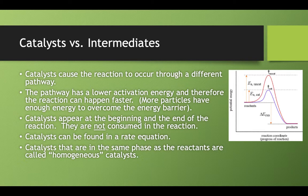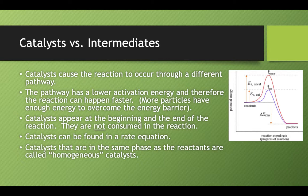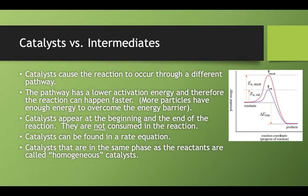Catalysts can be found in rate law equations. Remember that intermediates could not be found in rate law equations. So that's why we had that one example of substituting in equilibrium constant expressions in order to solve for our overall rate law. Catalysts can be found in a rate law equation. Intermediates cannot. If those catalysts are in the same phase as the reactants, we call those homogenous catalysts.